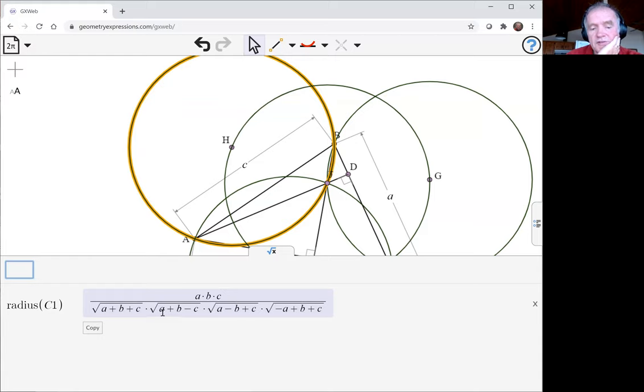But we've also got all combinations of A plus B minus C, A minus B plus C, minus A plus B plus C. So if we were to swap, say, A and B here, we would end up with the same expression. And that's exactly what we do if we look at the other two radii.